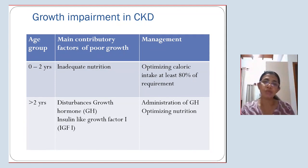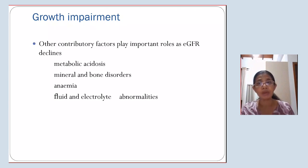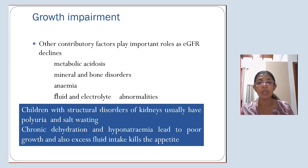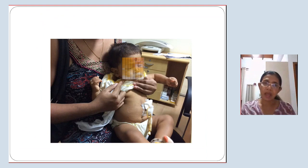After two years, poor growth is mainly due to disturbances of growth hormone and its main mediator IGF-1. Administration of growth hormone can improve growth after two years of age; however, optimizing nutrition is important in all age groups. Other contributory factors include metabolic acidosis, mineral and bone disorders, anemia, and fluid and electrolyte abnormalities. Children with structural disorders of kidneys usually have tubulopathies, polyuria, and salt wasting — chronic dehydration and hyponatremia cause poor growth. Excess fluid intake also kills appetite, indirectly affecting growth.